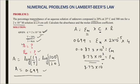8.73×10^3. Since the concentration was in terms of molarity, I write it as liter per moles per centimeter. This should be the unit of this extinction coefficient. This is how we solve such problems related to Lambert-Beer's law.